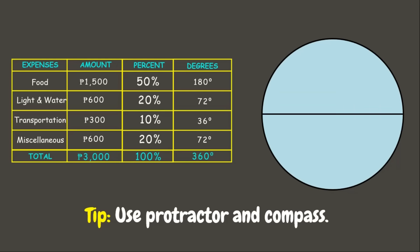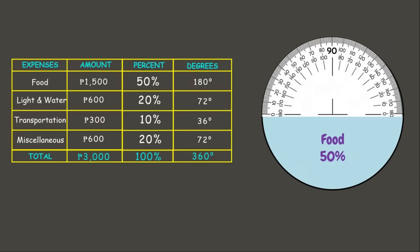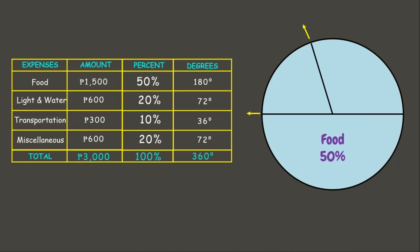This half will be the part for food. Next, for light and water, it is 72 degrees or 20 percent of the whole. Let us use a protractor — starting from zero, we mark until 72 degrees. There we have 70, and we add two more lines to reach 72 degrees. That is light and water: 72 degrees or 20 percent of the whole.